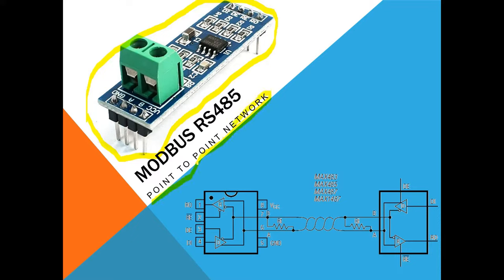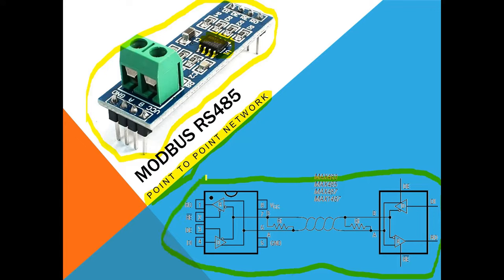We will cover point-to-point network now, and in the next tutorial we will cover more complex networks. This module is based on the MAX485 chipset, located in the middle. Since we are working point-to-point, our network will have only two nodes — the first node, called the master, and the second called the slave, or sometimes transmitter and receiver, or in Modbus terminology the driver and receiver.